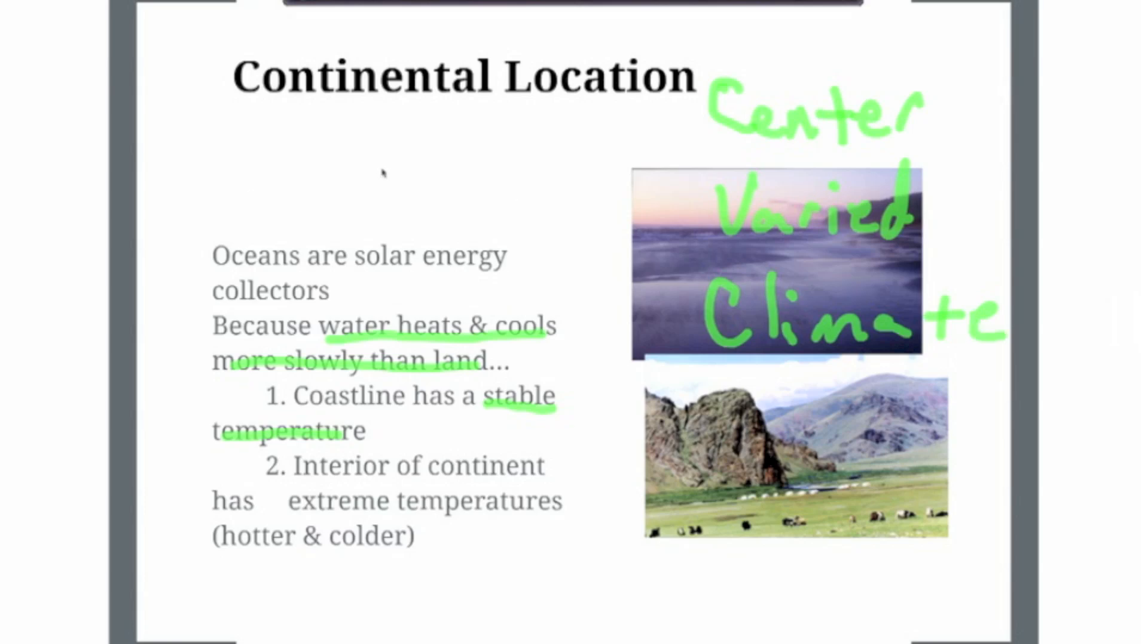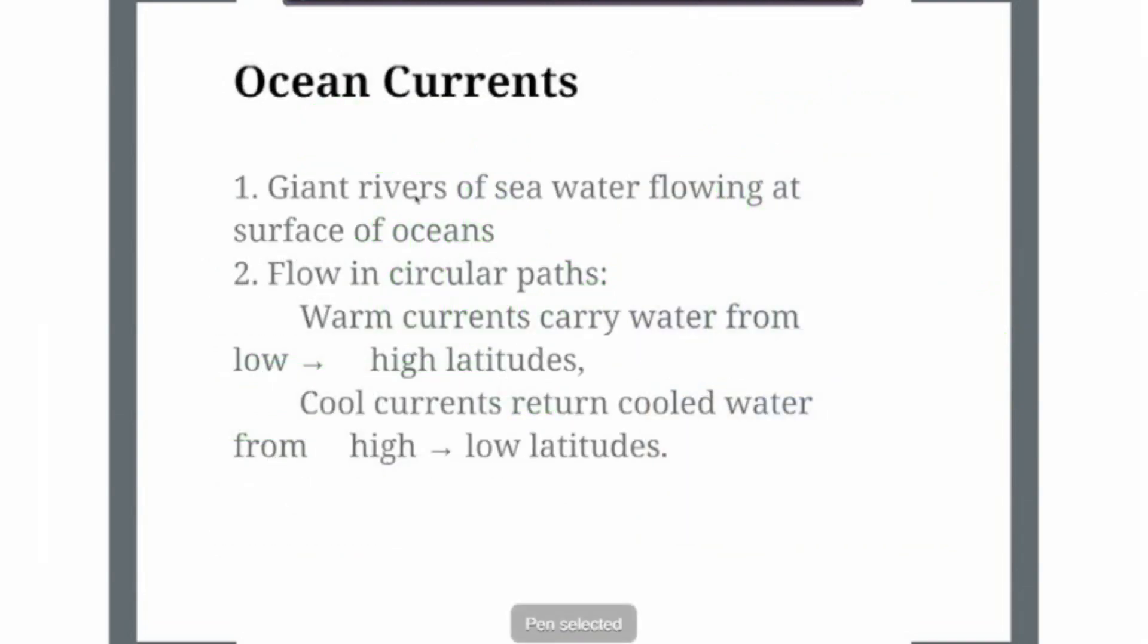And this idea that oceans heat up and cool off very quickly, it also affects wind patterns, which if you've seen the other video on monsoons, that explains how monsoons happen. So that is the continental location affect on the planet.